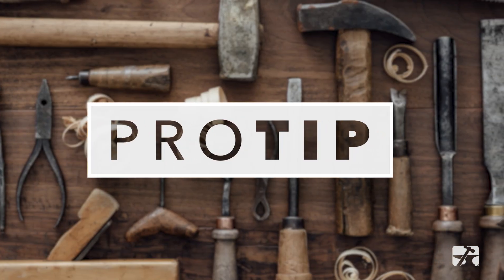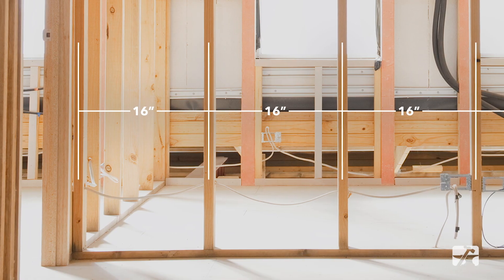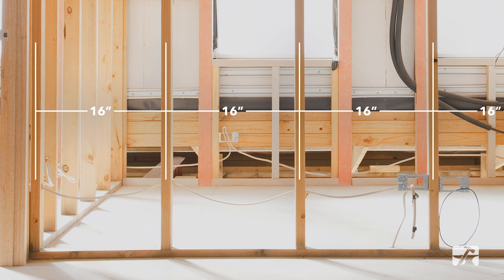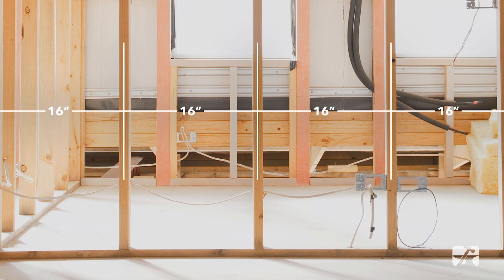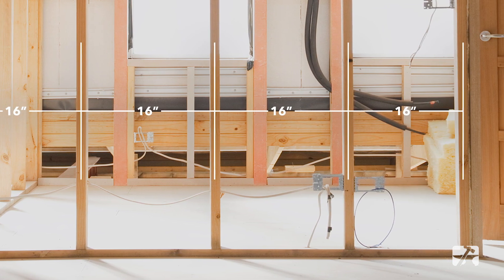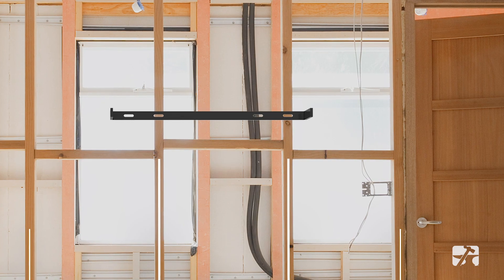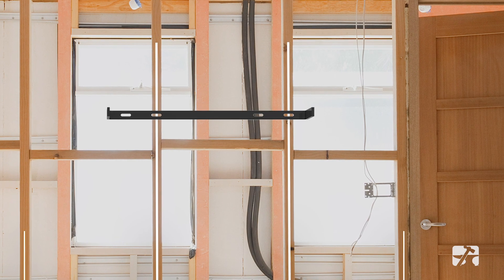Pro tip! In the U.S., it is standard to frame wall studs 16 inches apart from each other, also known as 16 inches on center. We design the bracket slots to line up with the wall studs accordingly.